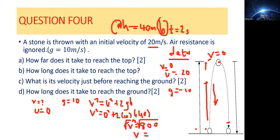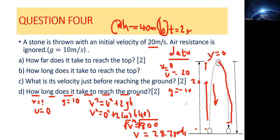Since we have v squared and we need v, we square root both sides. The square root of 800 is 28.28 meters per second — that's the velocity just before reaching the ground. For the last question — how long does it take to reach the ground — from the bottom to the top it took 2 seconds, and going back down it will also take 2 seconds. So total time equals 4 seconds.